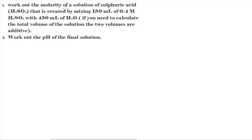The question says: work out the molarity of a solution of sulfuric acid H2SO4 created by mixing 150 milliliters of 0.4 moles per dm³ of H2SO4 with 450 milliliters of H2O. The two volumes are additive, and then work out the pH of the final solution.